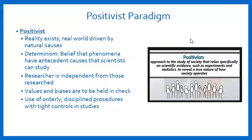Positivism relies specifically on scientific evidence — things like experiments and statistical analysis — to show the true nature of how people operate or how the world works. Underlying that are some assumptions. One assumption of positivism is that there is a single reality that we can study and learn about through disciplined research methods. That is called the principle of determinism, which basically underlies positivism.